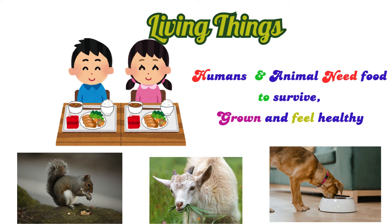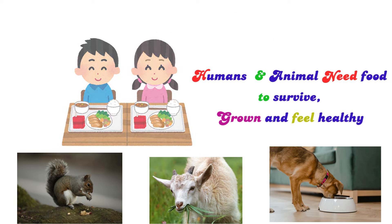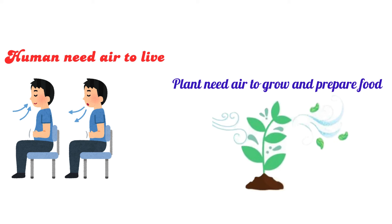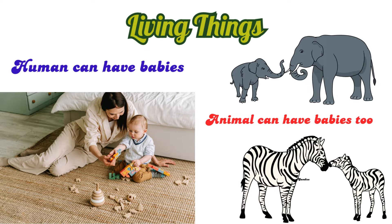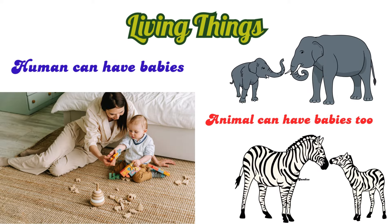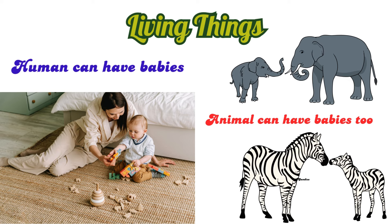In the picture, if you see, humans and animals need food to grow and feel healthy. Humans and plants also need air to stay alive. Plants need air to cook their food. And living things can have babies — humans can have babies, and animals also can have babies.